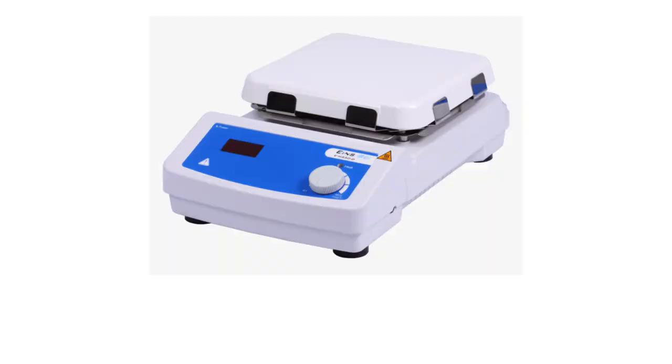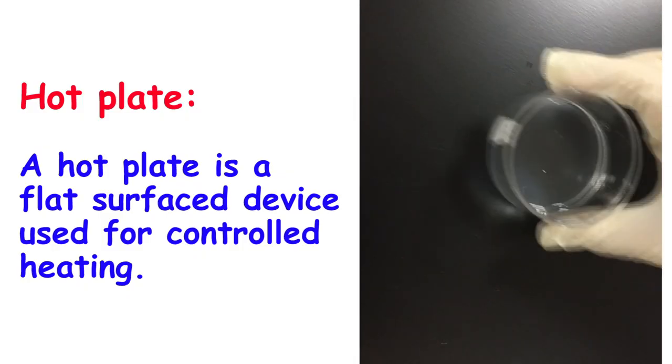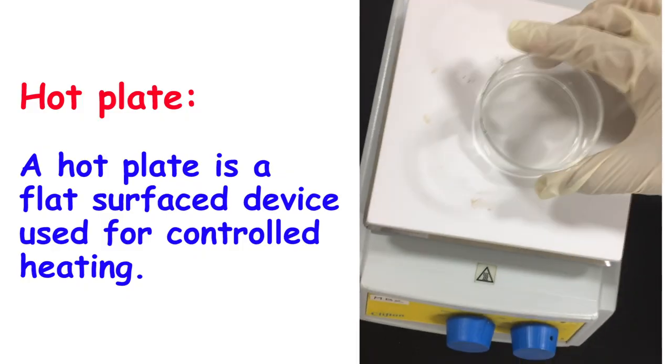A hot plate is a flat surface device used for controlled heating. The hot plate is connected to electricity and is less harmful than the direct flame produced by the benzene burner.